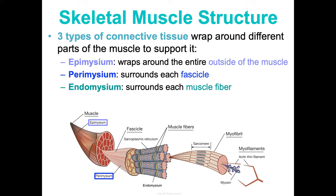These connective tissues are important for support, reinforcement, and holding the muscle's complex structure together. They also keep bulging muscles from bursting during intense contractions. The epimysium and perimysium are dense irregular connective tissues, and the endomysium is a fine areolar connective tissue. Your connective tissues are continuous with the tendons joining muscles to bones and serve as routes for blood vessels and nerve fibers that innervate the muscles.